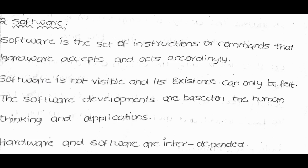Software is a set of instructions and commands that hardware accepts and acts accordingly. Software is not visible — its existence can only be felt. Software is a set of programs developed based on human thinking and ideas. Hardware and software are interdependent.